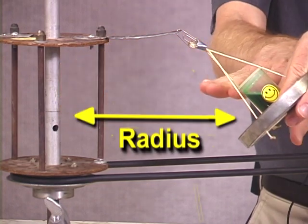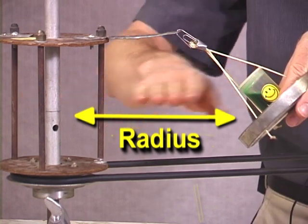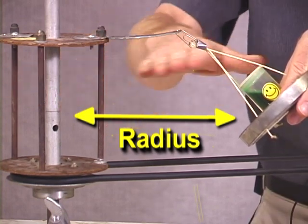Now, that has to be a perpendicular distance to the axis because the motion, the circular motion, is in a horizontal circle.